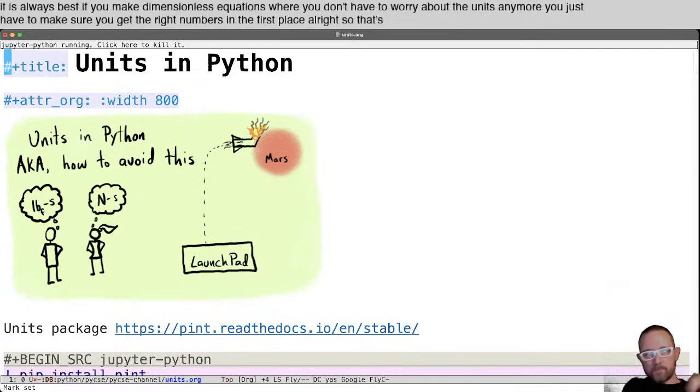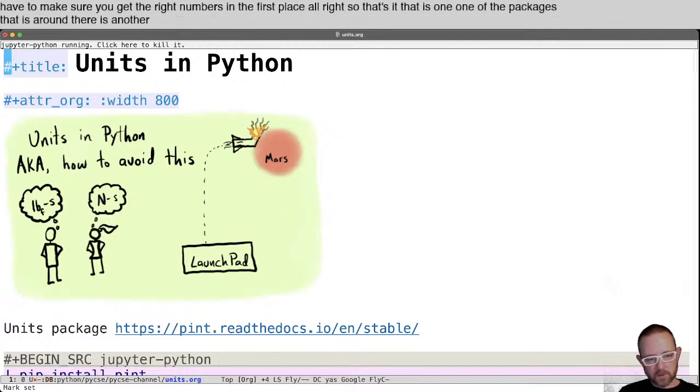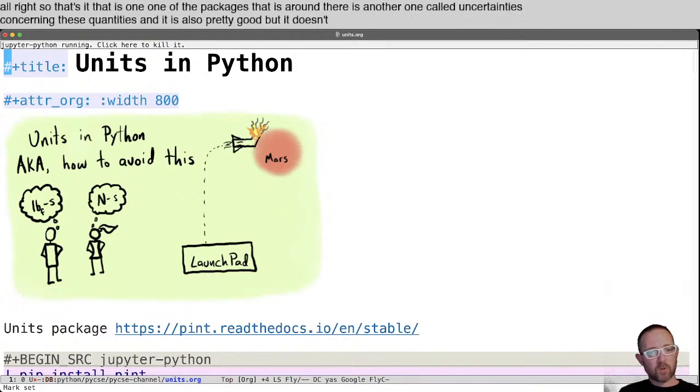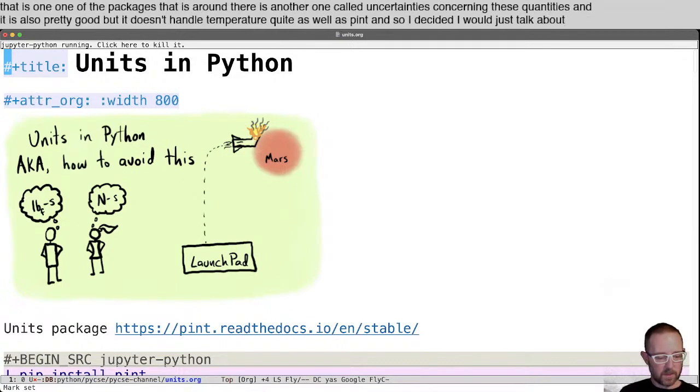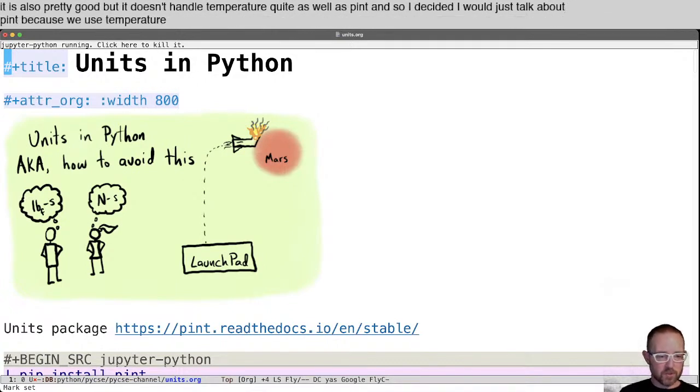All right. So that's it. That is one one of the packages that is around. There is another one called uncertainties, not uncertainties, quantities, and it is also pretty good, but it doesn't handle temperature quite as well as pint. And so I decided I would just talk about pint, because we use temperature in chemical engineering. And so a package that doesn't do temperature is not that practical for us.